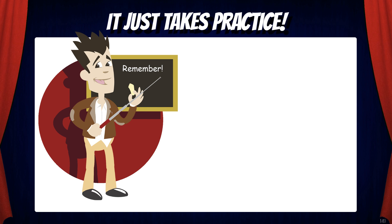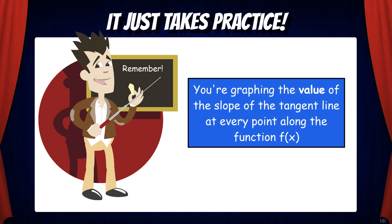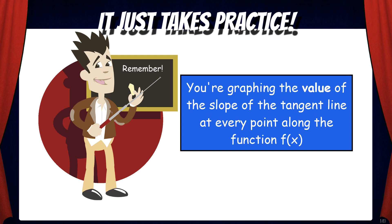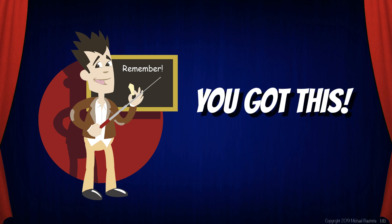So in summary, it just takes practice to learn how to draw derivative functions. What you need to remember is that you're actually graphing the value of the slope of the tangent line at every point along the function f. And that gives us a picture of the function f prime. Just keep on practicing and soon you'll be able to see these very quickly. You got this!